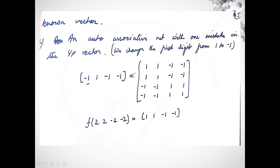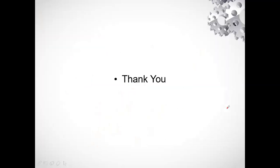Passing the result [2, 2, -2, -2] through the activation function: since 2 is greater than 0 we get 1, and -2 is less than 0 we get -1. So the final response is [1, 1, -1, -1], which matches the originally stored vector. This confirms the auto-associative network can correctly recall the stored pattern even when the input has one mistake. That's all for today's lecture. Thank you very much.